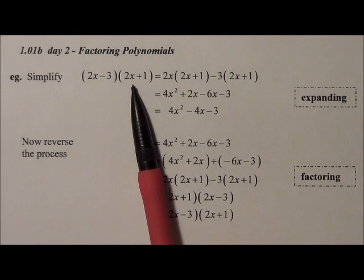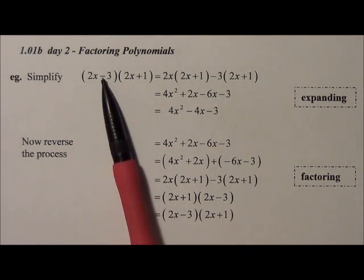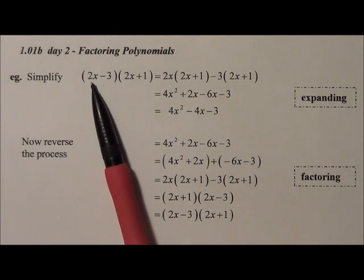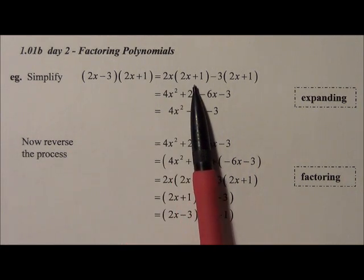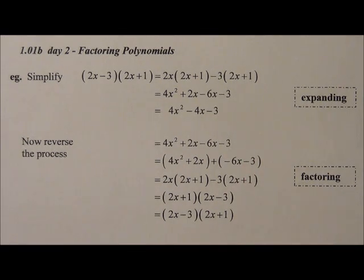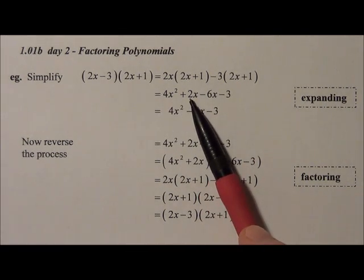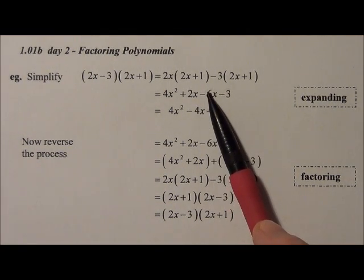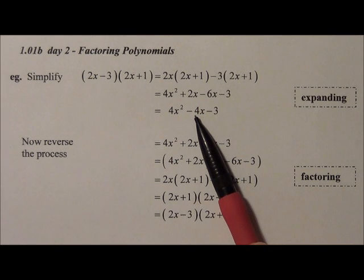So if we have (2x - 3)(2x + 1), we have both terms of the first bracket multiplied by both terms of the second bracket. We expand that out, so we get 4x² + 2x, and then -6x - 3, and we group the two middle terms together to get -4x.